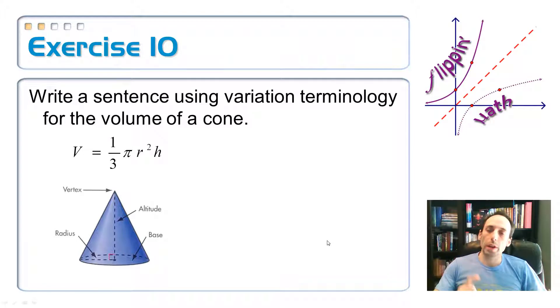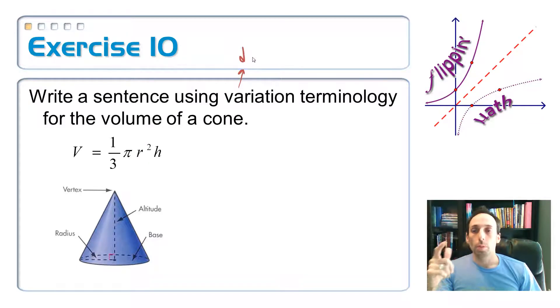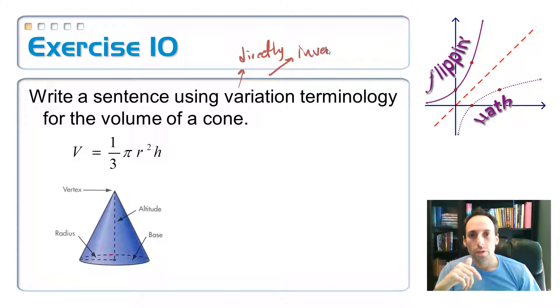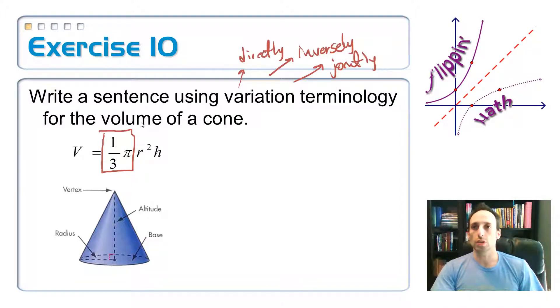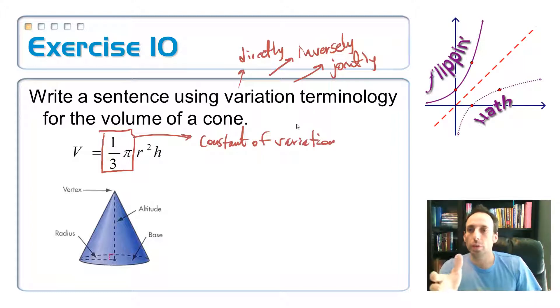Okay. Last one. Write a sentence using variation terminology for the volume of a cone. So variation terminology. You see this in your homework or whenever you see this on a quiz. What this means is I'm saying is it directly proportional? Or is it inversely? Or is it jointly? That's what I'm talking about. So take a look at the equation. The volume of a cone, a right circular cone, is one-third pi r squared h. The first thing to realize about this is that the one-third pi doesn't change. No matter what you stick in for the height, no matter what you stick in for the radius, those things don't change. Which means that that part is the constant of variation.